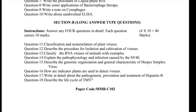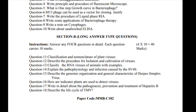Question 17: Write in detail about the pathogenesis, prevention and treatment of Hepatitis B. Question 18: Describe the life cycle of TMV. There are total eight questions in Section B and you have to attempt only four; each question carries 10 marks.